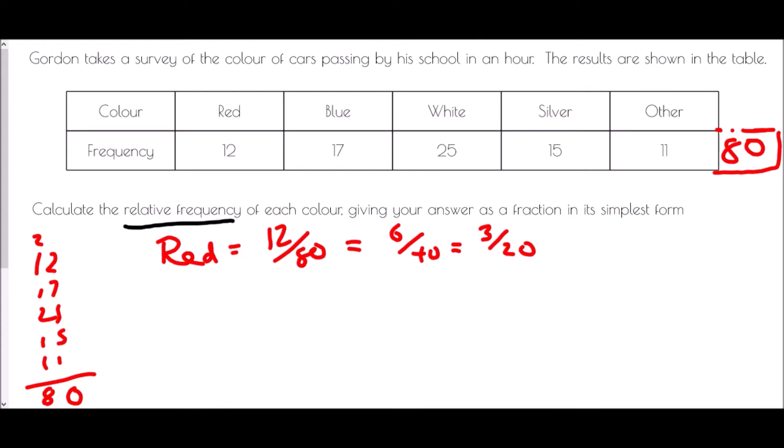If we go to the blue cars, well blue, that was 17 out of 80. Now 17 out of 80 is actually as simple as we could get.